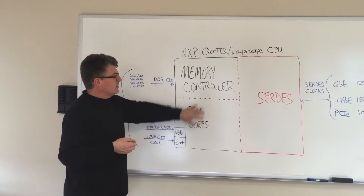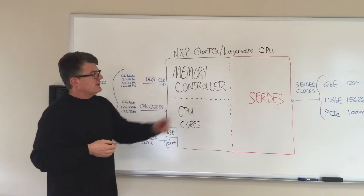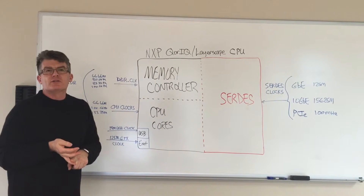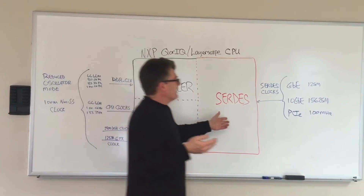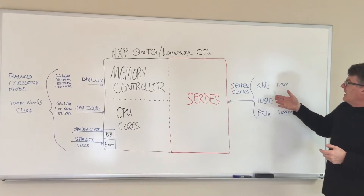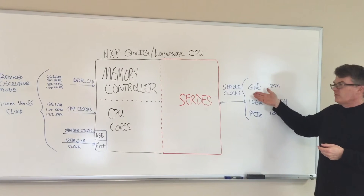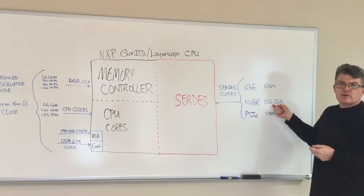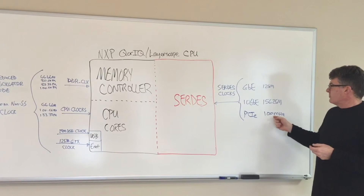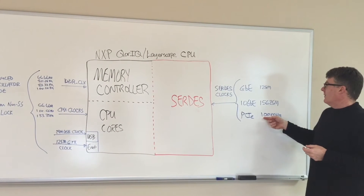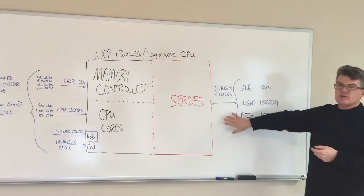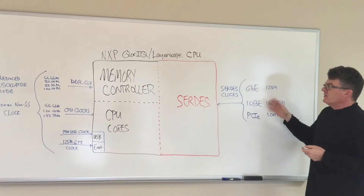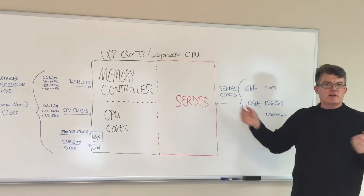That's the basics for the CPU and the memory controller. The SERDES is really dependent upon the particular CPU you're using and how many SERDES lanes you need in your design. The SERDES clocks basically range from a 125 MHz differential clock for gigabit Ethernet. If you're using 10 gigabit Ethernet, a 156.25 MHz clock is required. And if you're using PCI Express, you'd use a standard 100 MHz PCI Express clock. All these happen to be differential, and the number of SERDES lanes and their capabilities depends on the CPU you're using. This gives you an outline of how to do a quick tally of what kind of clocks you need.